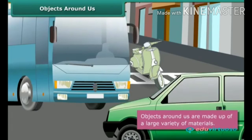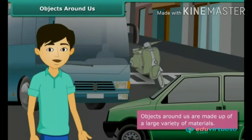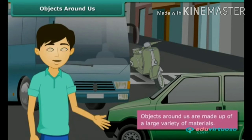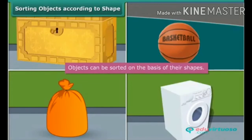A box is cuboid in shape. A ball is a sphere. A laundry bag is cylindrical in shape, whereas the washing machine is cuboidal. Thus, we can classify objects on the basis of their shape. Circular and spherical objects form one group, while square, cubical, rectangular, and cuboidal objects form another group. Such a classification allows us to study and analyze the properties of different shapes.